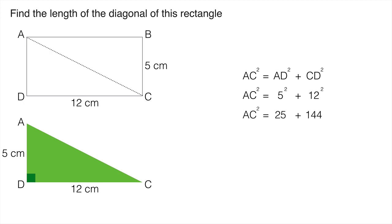Now we know that 5 squared is 25 and 12 squared is 144. So we get that AC squared is 169.